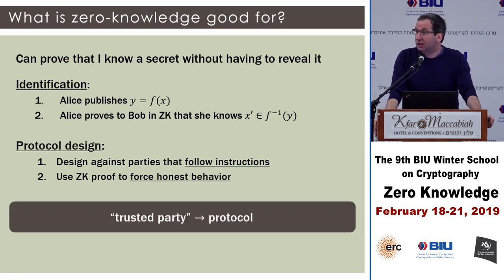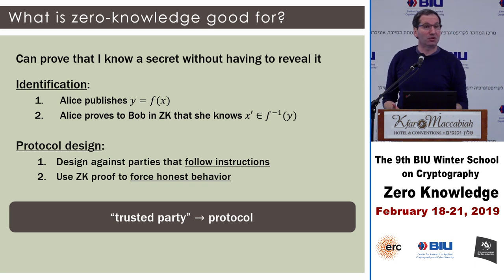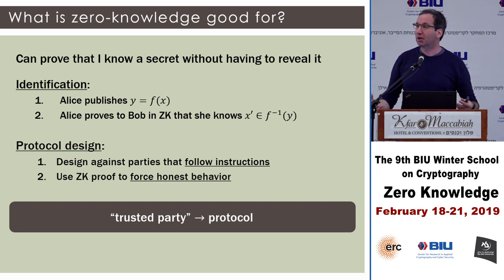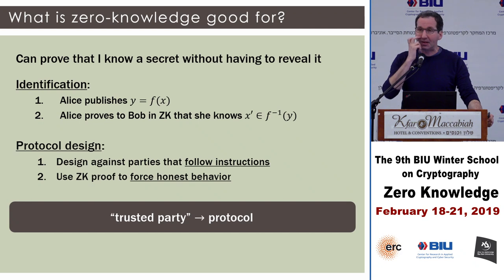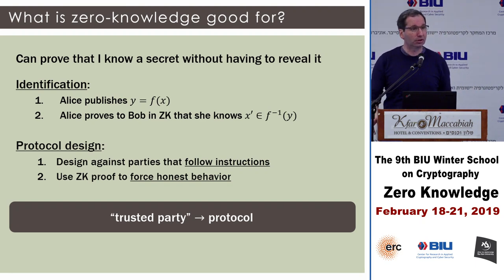More generally, this is a general cryptographic framework: it enables us to go from a model where we assume we have a trusted party that does whatever it's supposed to do, and get a full-fledged cryptographic protocol using zero knowledge. In some sense, zero knowledge is what enables us to go from a setting in which we trust into a setting in which we do not trust. This is the most general tool we have.